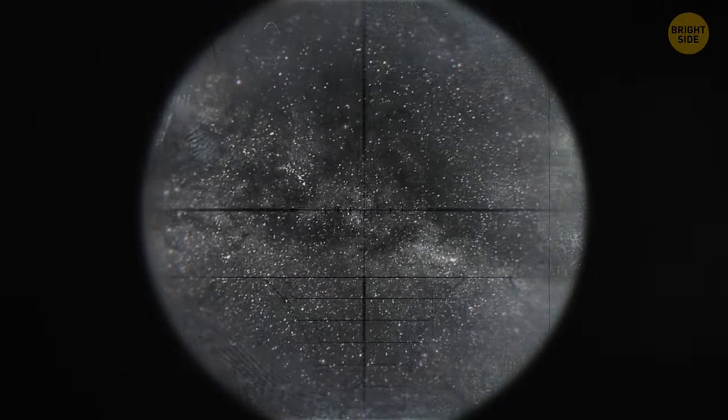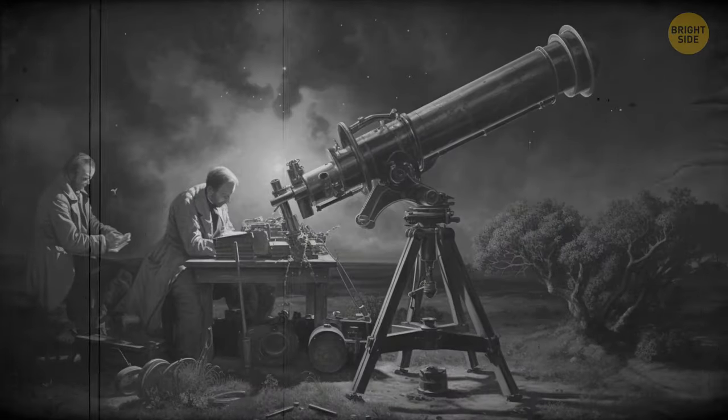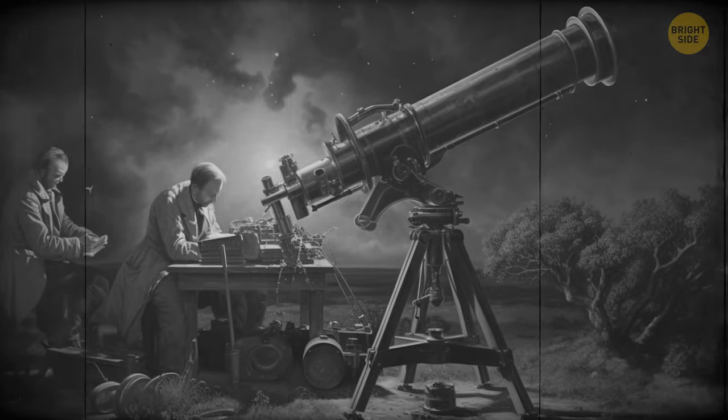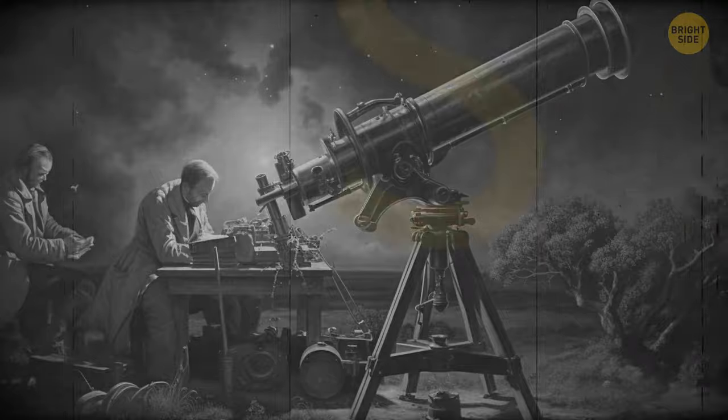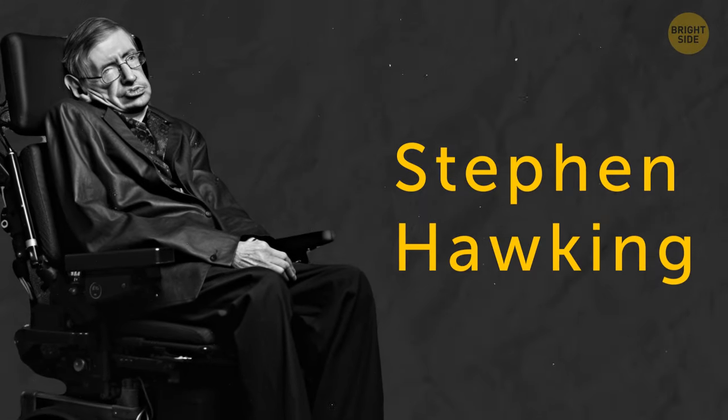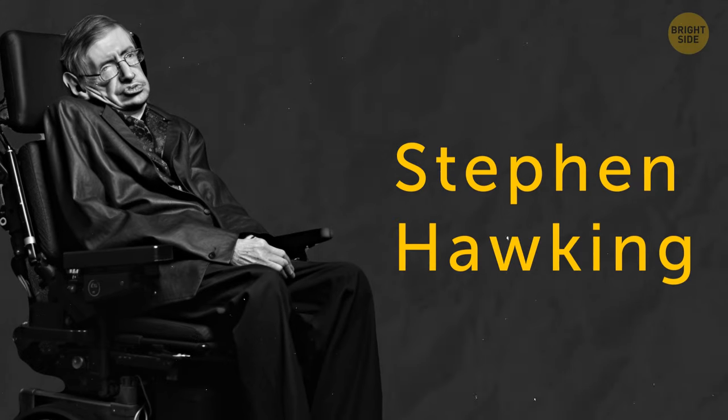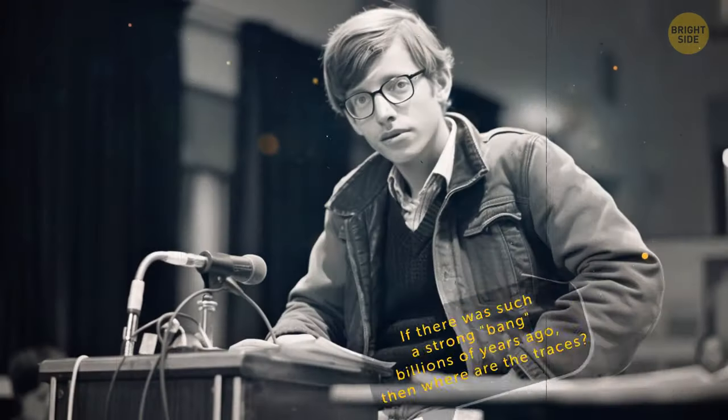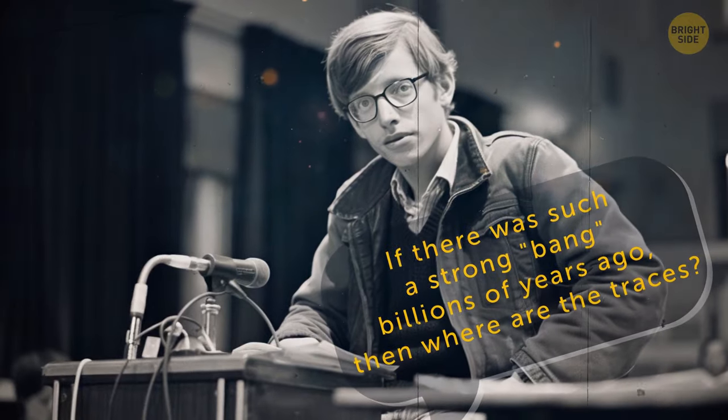Previously, scientists believed that the universe had always existed. There was no beginning, and there was no end. It sounded pretty ridiculous to us now, but less than a century ago, people were absolutely sure of it. Stephen Hawking was one of the first scientists to guess that the universe did, in fact, have a beginning. The guy was so cool that he realized this as a student while working on his doctoral dissertation. But unfortunately, he had no proof. If there was such a strong bang billions of years ago, then where are the traces? Where's the proof? Laughed people who believed in the Eternal Static Universe Theory. But don't worry. They had the proof rubbed in their faces real soon.